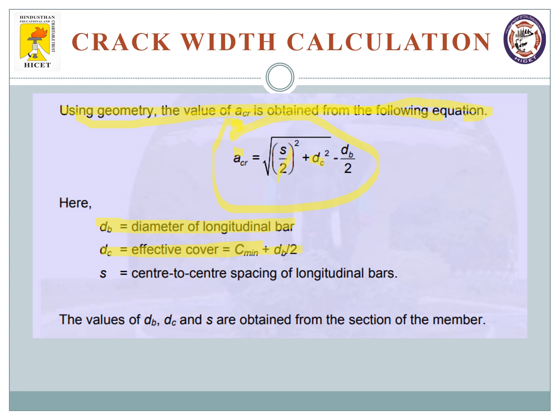dc is the effective cover, half of your cover plus your longitudinal bar direction. And s is the center to center spacing of longitudinal bars. If you calculate all these values and substitute in this formula, you will get the value of ACR. This value is almost identical to the value gotten using diagrams.